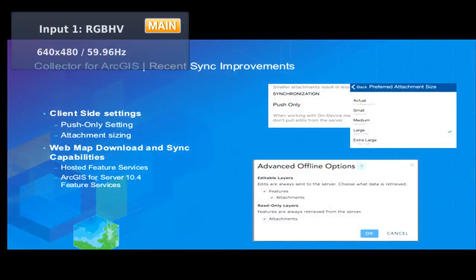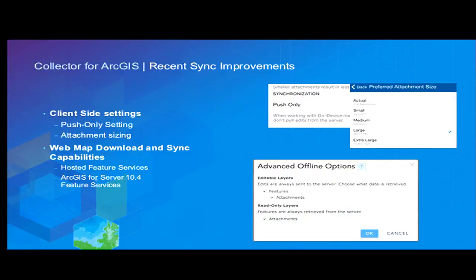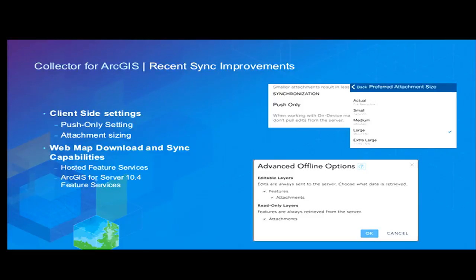Just to summarize: the advanced offline options shown are part of the web map details and are supported with hosted feature services today. If you want to use them with your own ArcGIS Server feature services, you'll need version 10.4 or higher — except the schema-only option, which works with 10.3 and 10.3.1. You can also resize photos in the settings to bring the size down. And if you're in a low-bandwidth connection and need to just upload, you can go into Collector settings and turn on the push-only setting — that'll just do an upload to get your data back quickly.